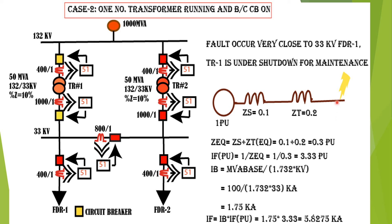The base current at 33kV is calculated as: I_base = MVA_base / (√3 × kV_base) = 100 / (1.732 × 33) = 1.75 kilo-ampere. Therefore, the actual fault current = I_base × I_fault(pu) = 1.75 × 3.33 = 5.8275 kilo-ampere. This is the fault current at the 33kV bus when one transformer is running.